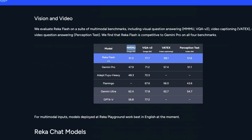On multimodal benchmarks — the massive multi-modal understanding benchmark, which is roughly the MMLU equivalent for multimodal tasks — Gemini Pro scored 47.9 while Reka Flash scored 51.3. On image Q&A and VQA, Reka Flash scored 77.7 versus Gemini Pro's 71.2. On video captioning and video tests it is either better or on par with Gemini Pro. This is quite promising — it crushes everything except Gemini Ultra and GPT-4 Vision.